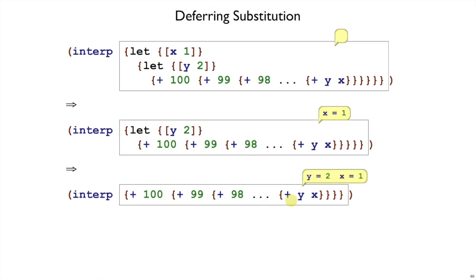As the interpreter goes through this expression, it will eventually get to interpreting a y, but that y will still have this bubble attached to it that says I deferred a substitution of y to 2. So it will replace that with a 2 right away.